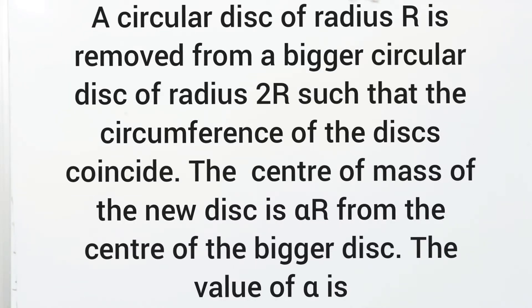A circular disc of radius R is removed from a bigger circular disc of radius 2R such that the circumferences of the discs coincide. The center of mass of the new disc is alpha R from the center of the bigger disc. The value of alpha is. Here are the options.